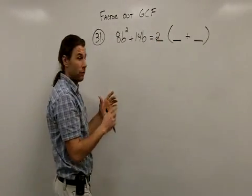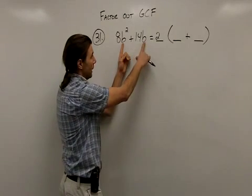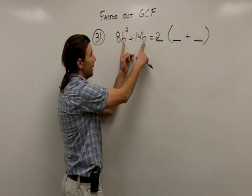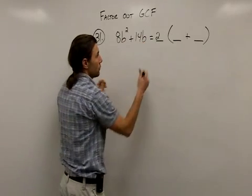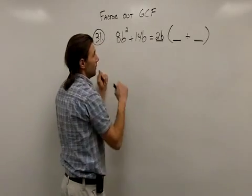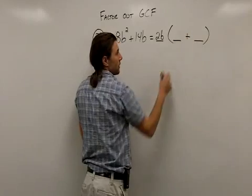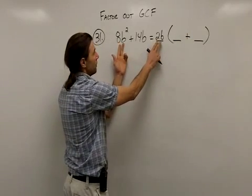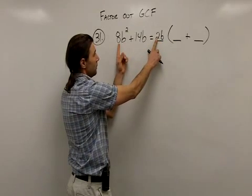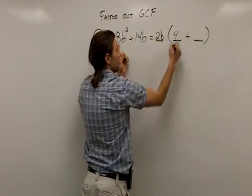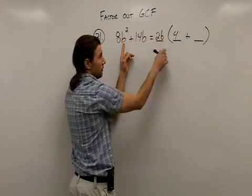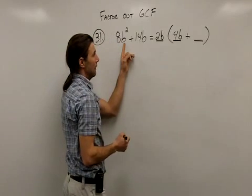Now let's take a look at the variables. I have a b² and a b. Well, I have two b's being multiplied here and I have one there. So they have in common 1b. So the greatest common factor for my variable parts is b. Now I'm going to divide this out and that will tell me what's going to be left inside the parentheses. So if I divide a 2b out of the first term 8b², we'll start with the numbers again. 8 divided by 2, 4b². If I divide one of those b's out, there will be one left.